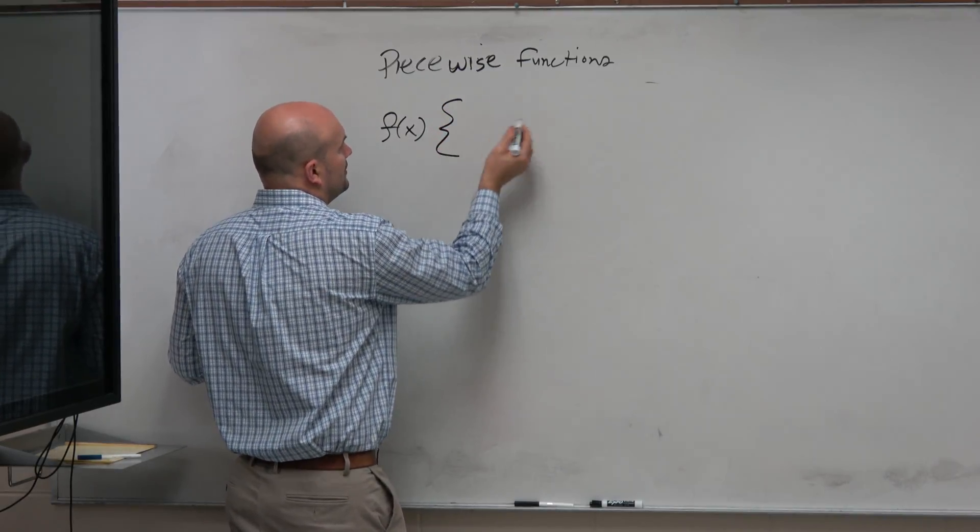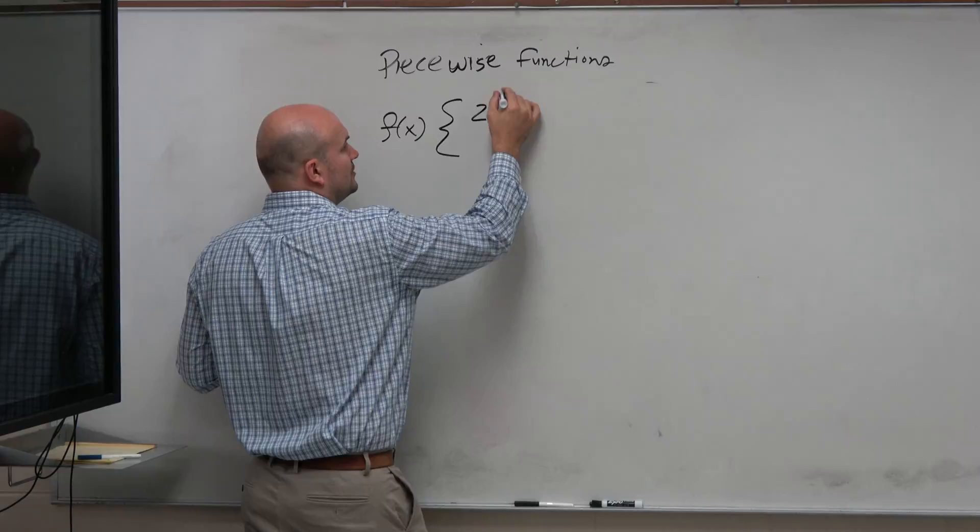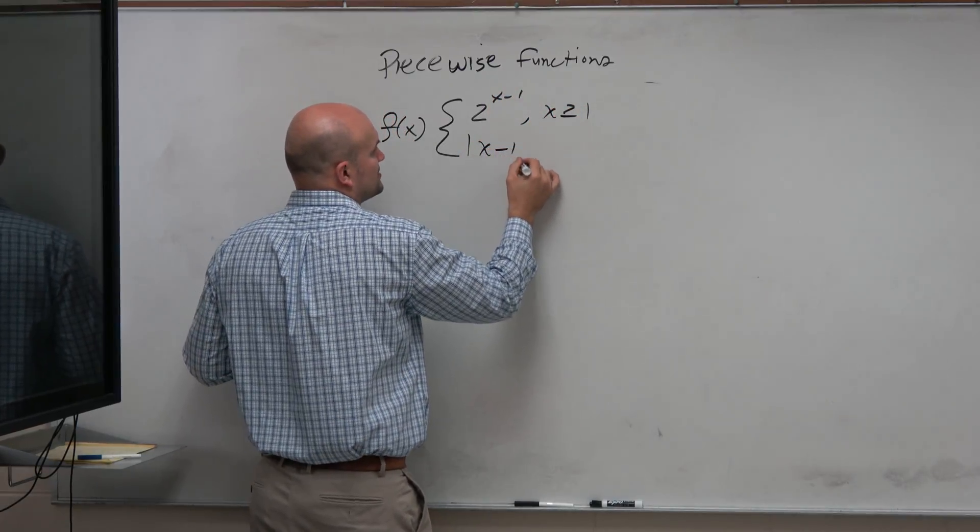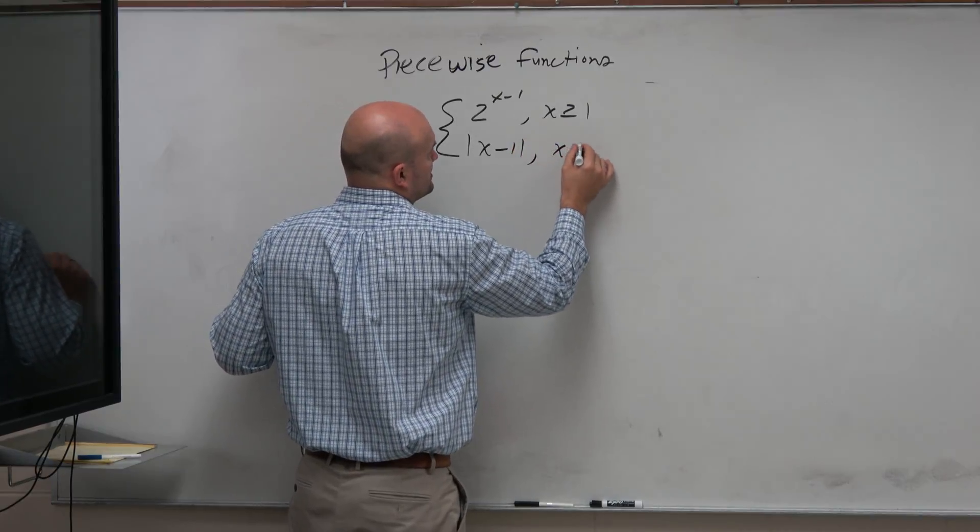So we're going to have something. Let's go ahead and do x minus 1, x is greater or equal to 1, and then absolute value of x minus 1, x is less than 1.